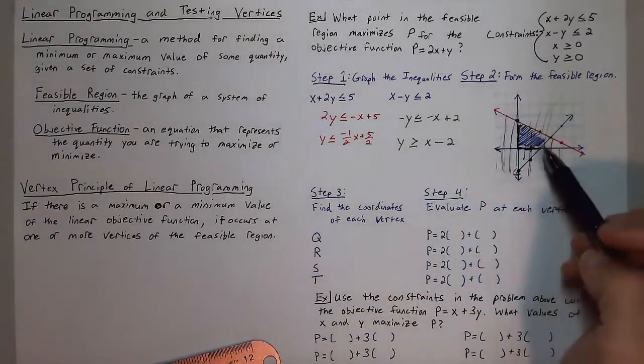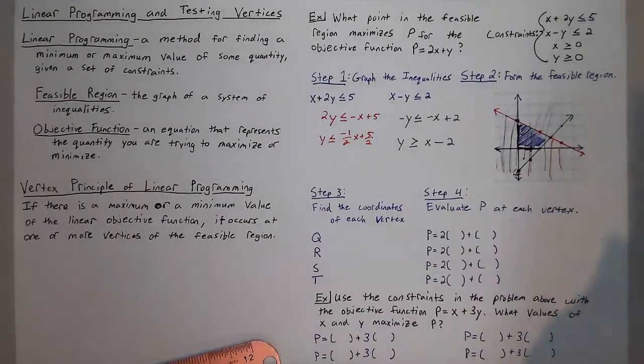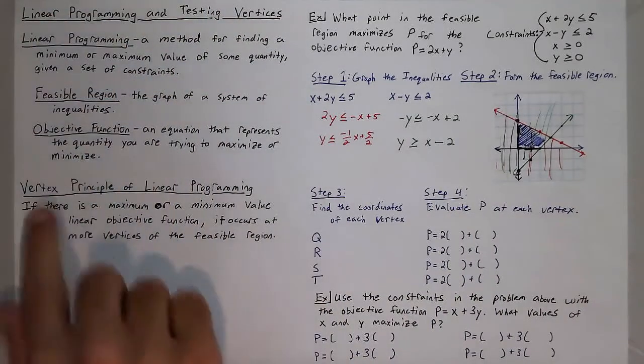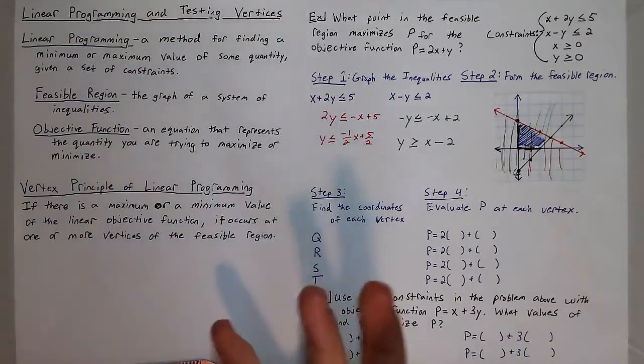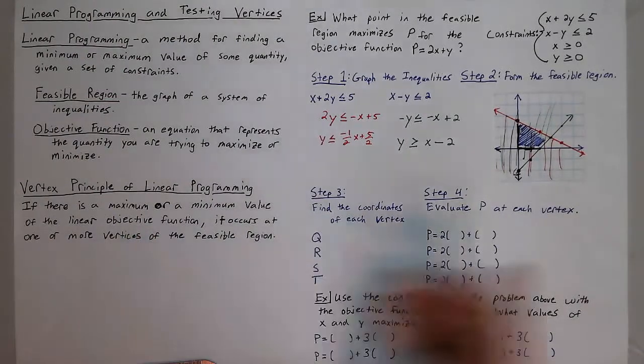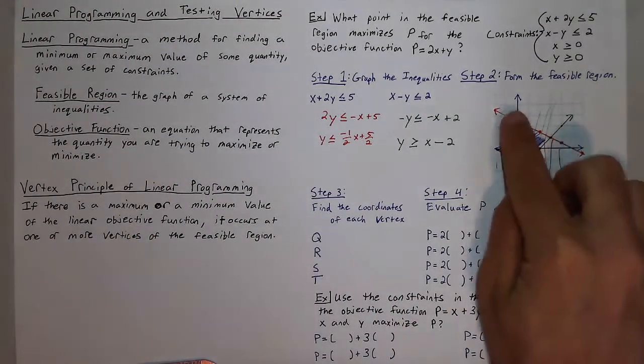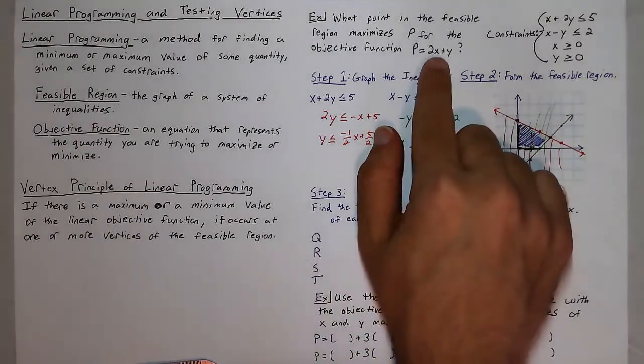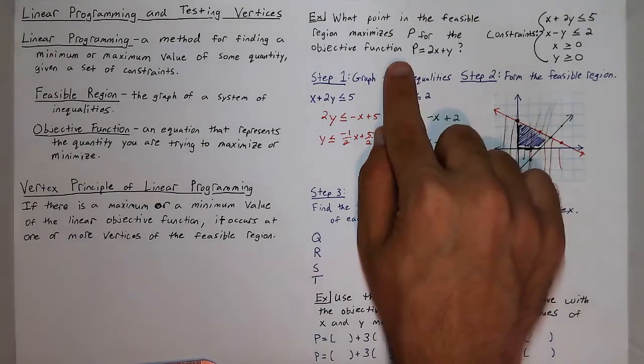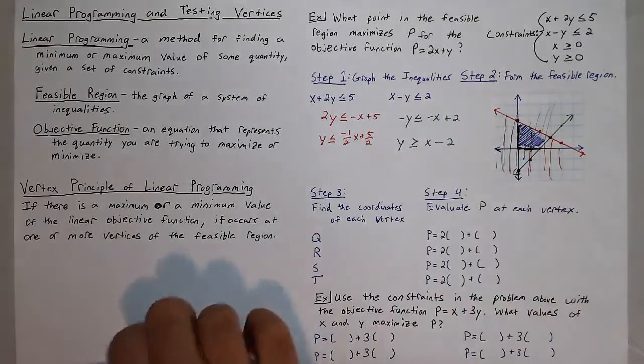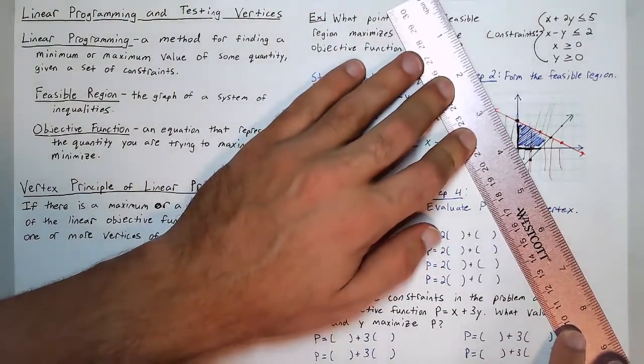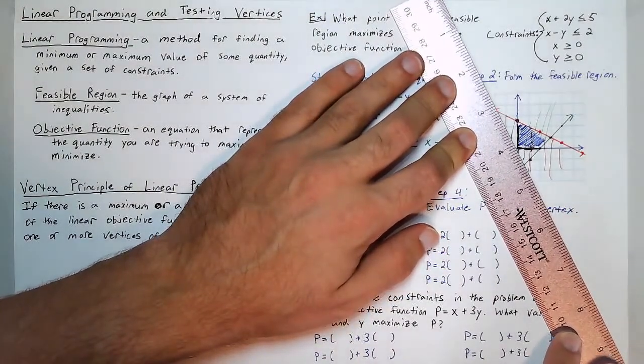So now we form the feasible region by graphing our inequalities. Now we need to find the coordinates of each vertex. And the reason why we want to do this is that if there is a maximum or minimum value of the linear objective function, it must occur at one of these vertices. And a good rationale for that is if we took our objective function and we solved it for y, we would get negative 2x plus p.